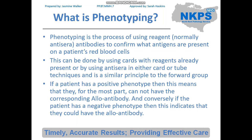Phenotyping is the process of confirming what antigens are on a patient's red blood cell. We would use reagent antibodies to react with the patient's red blood cells. It can be done using cards with reagents already present or by adding antisera in a card tube technique, so it works very similar to the forward group.